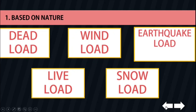Last on the list is earthquake load. Earthquakes produce loadings on a structure through its interaction with the ground and its response characteristics. These loadings result from the structure's distortion caused by the ground's motion and the lateral resistance of the structure. Their magnitude depends on the amount and type of ground acceleration and the mass and stiffness of the structure.